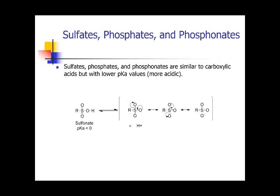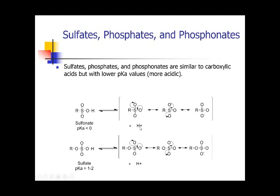Sulfonates have a pKa of less than zero. The reason is resonance stability, as well as the electronegative difference between the various elements. It does have an ability to readily lose a proton. Sulfates, having an extra oxygen, have a slightly elevated pKa compared to sulfonates — a pKa of 1 to 2. Because the pKa is so low, you need to be at pH 2 for this molecule to have a proton. So the only time it is ever protonated is when it's in your stomach. At any other physiological pH, such as 7.4, it will be deprotonated.